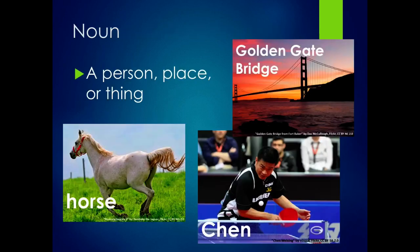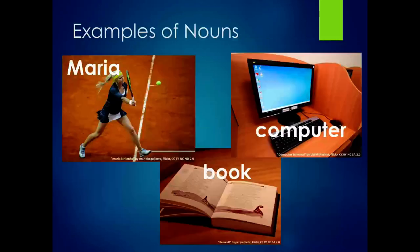Noun. A noun is a person, place, or thing — like a horse, chin, or the Golden Gate Bridge. Examples of nouns: Maria, book, and computer.